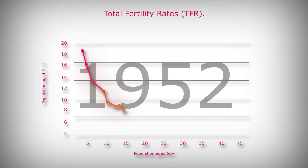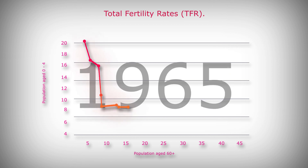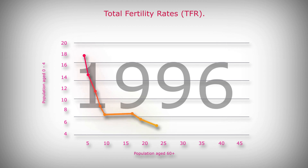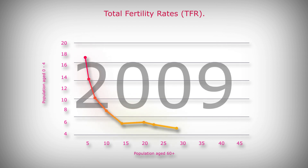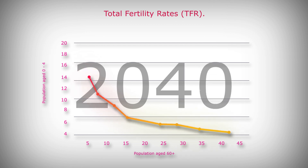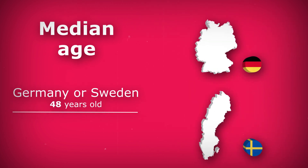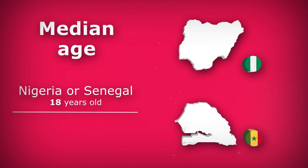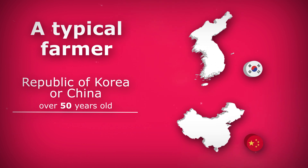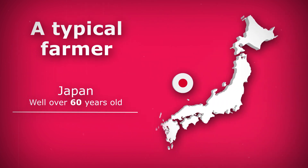Total Fertility Rates are a key determinant of population. There is a global trend of declining birth rates alongside increased longevity. A little over 60% of the global population now live in countries with a total fertility rate below replacement rates. For example, the median age in Germany or in Sweden is 48 years old, whereas in Nigeria or Senegal it is around 18 years old. A typical farmer in Korea and China is now over 50 years old, and in Japan it's well over 60 years old.